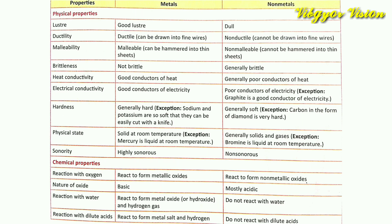Next property is sonority: metals are highly sonorous, while non-metals are non-sonorous. Now let's see the chemical properties. Reaction with oxygen: metals react with oxygen to form metallic oxides, while non-metals react with oxygen to form non-metallic oxides. Regarding the nature of oxides, metallic oxides are basic in nature, and non-metallic oxides are acidic in nature.